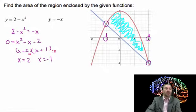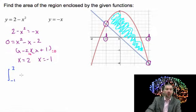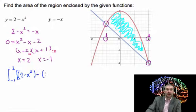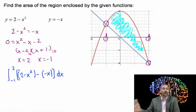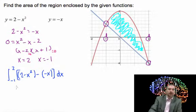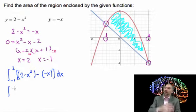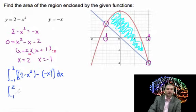Now integrate top minus bottom from negative one to two. We integrate the top equation, 2 minus x squared, minus the bottom equation, minus negative x. It's really important that you subtract the entire bottom equation — it's minus negative x, not just minus x. Working it out, we simplify to 2 minus x squared plus x, and that's what we integrate.